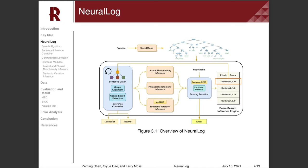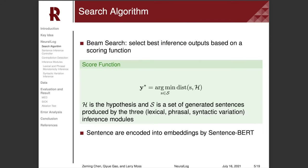If the system fails to find a path, the controller will check if the premise contradicts the hypothesis. We use beam search as the main search algorithm. In the algorithm, we define the scoring function as the distance between two sentences, where each sentence is encoded by a pre-trained transformer model, Sentence-BERT.